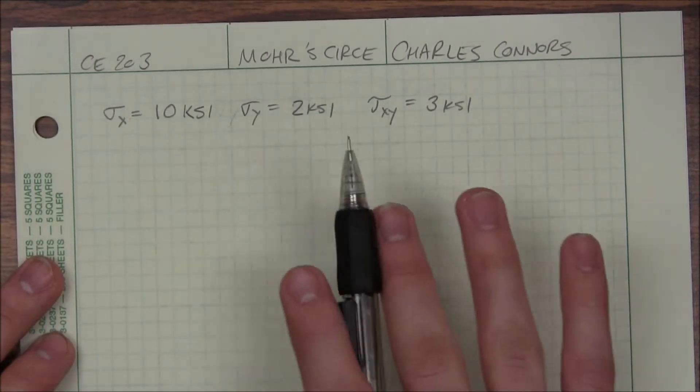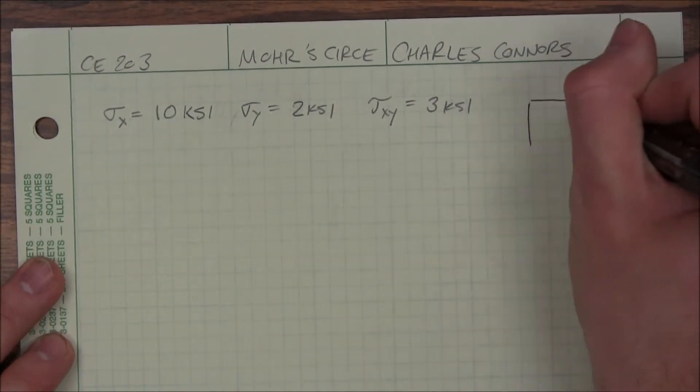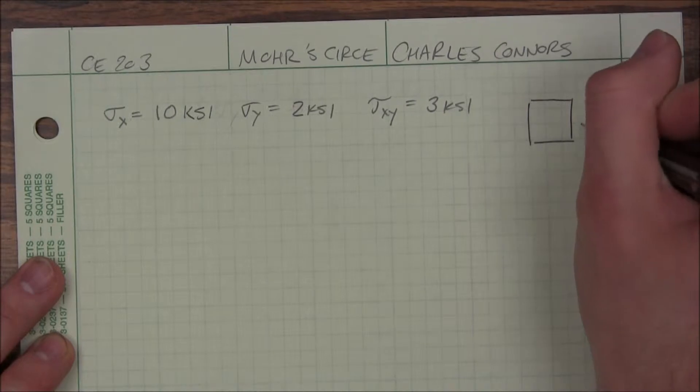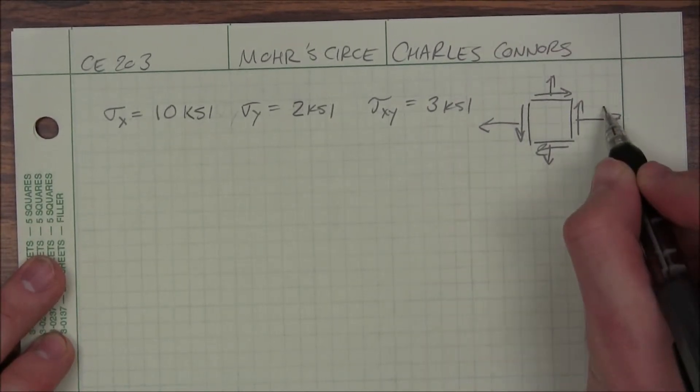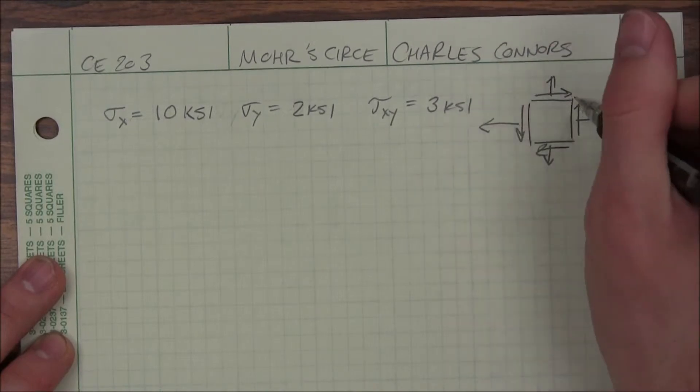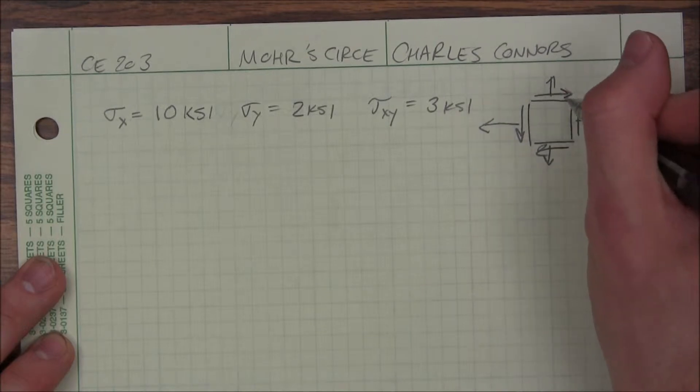Now I say X and Y direction because that's how it is when I'm actually drawing my element, which I'll draw here on this side. So the things to remember, this is my X direction, this is my Y direction, and out is positive. For my shear, it's right up against my box.